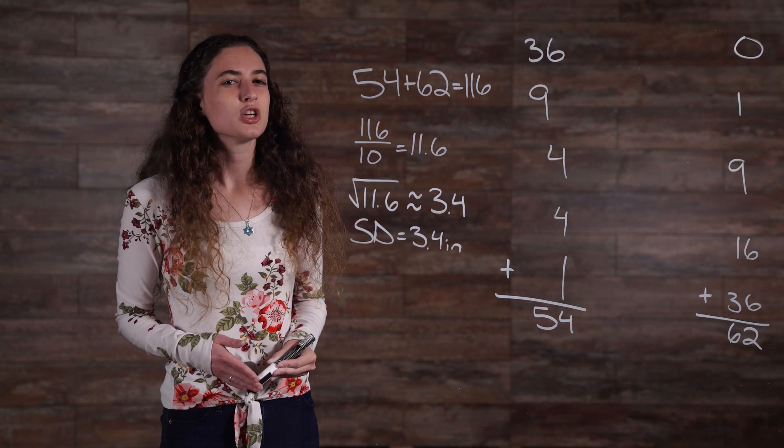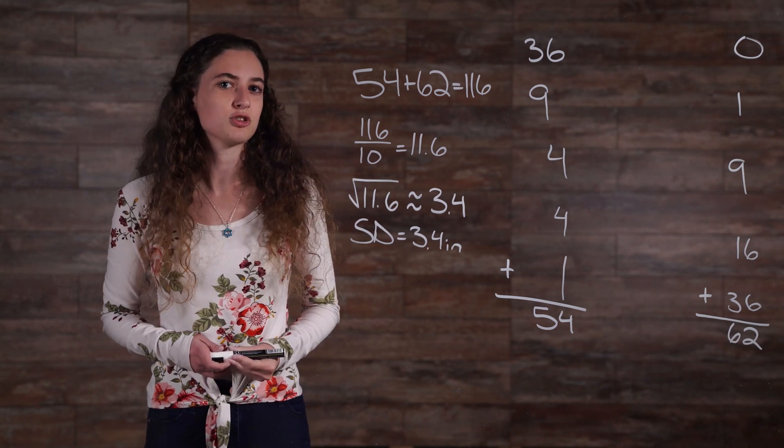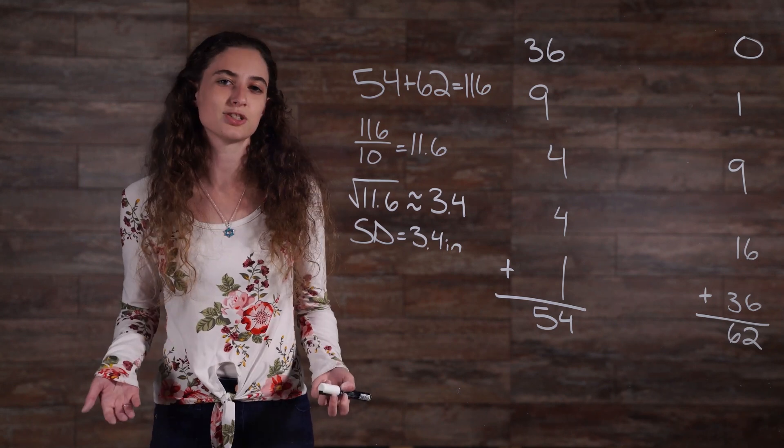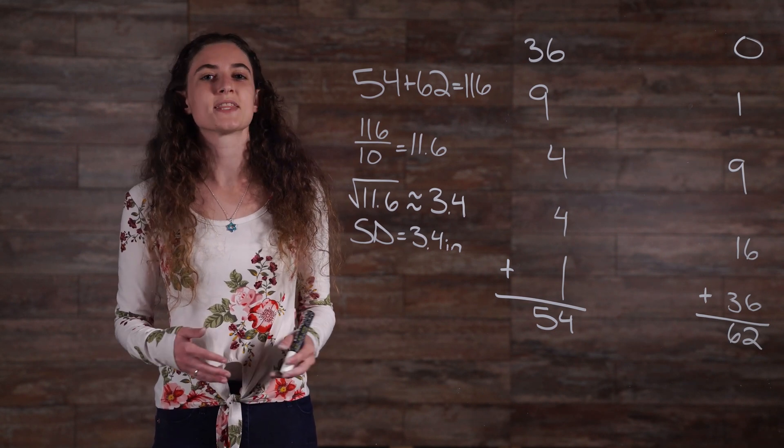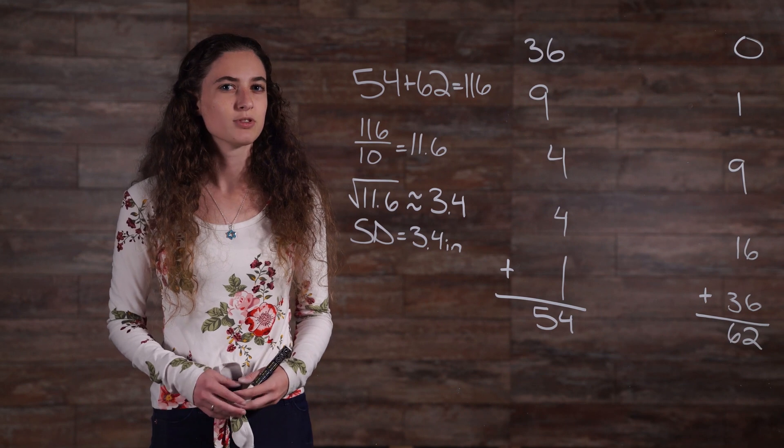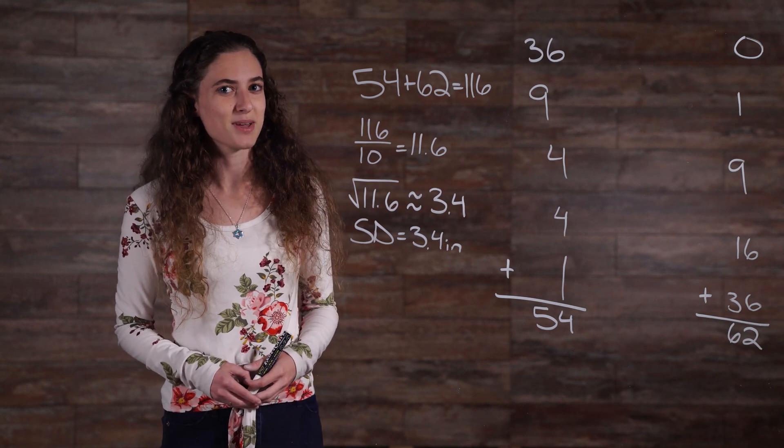In reality, you probably wouldn't calculate a standard deviation on such a small population, but this just gives you an idea. The process would still be the same four steps even if there were a thousand students in your population, though that sure would take a lot longer to calculate manually.